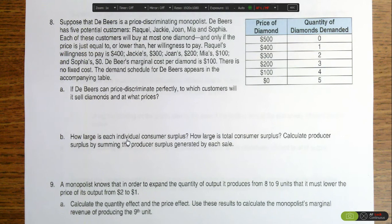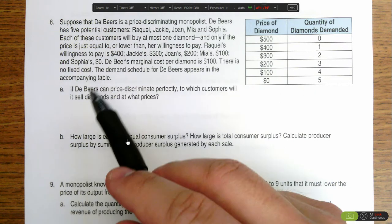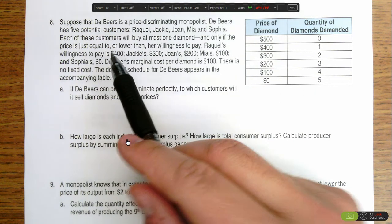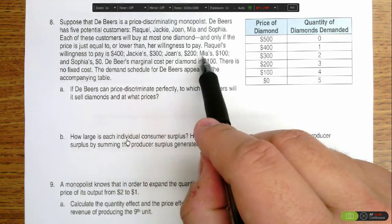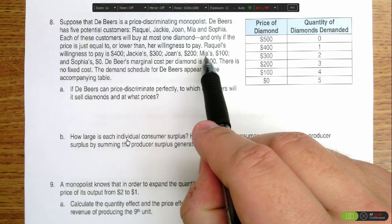We know that in perfect price discrimination situations in Part A, we're going to sell four diamonds and each person is going to pay their maximum willingness to pay. So for each of the four purchasing a diamond - Raquel, Jackie, Joan, and Mia - their consumer surplus is going to be zero.